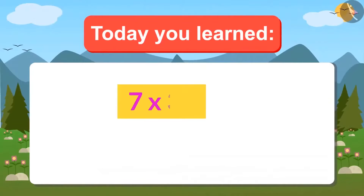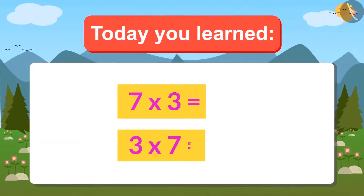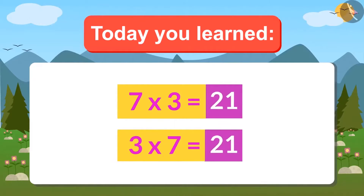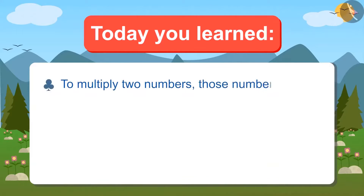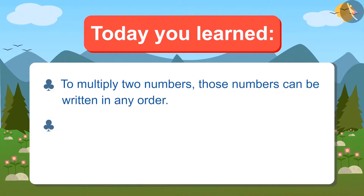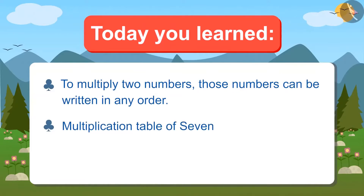Today you learned that whether you multiply 7 by 3 or 3 by 7, the answer will be 21. That means when two numbers have to be multiplied, they can be written in any order and the answer will be the same. We also learned the multiplication table of 7. Now write 7's multiplication table and memorize it by singing.